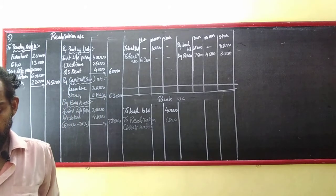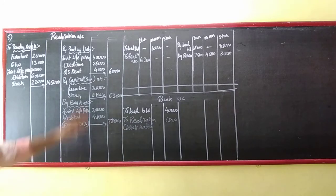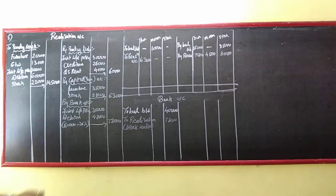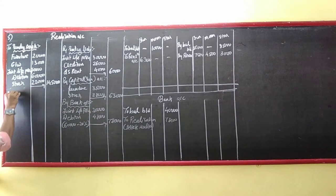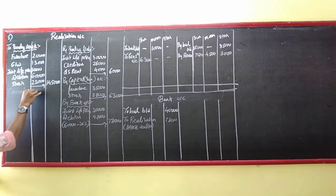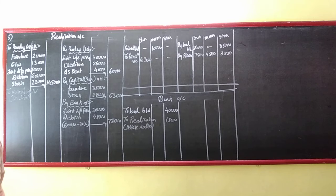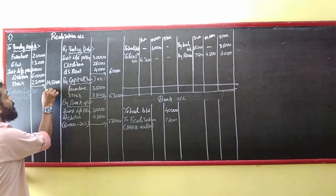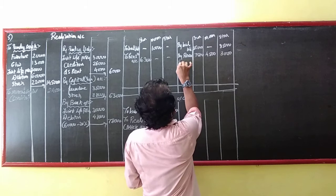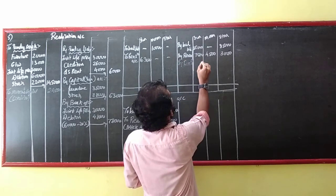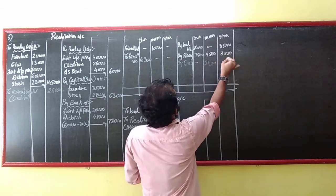Adjustment number 3: Sundry creditors were taken over by Moon at agreed value. Moon is going to pay the creditors, so Moon's capital account will be debited. Realization account to Moon's capital for creditors. Is he paying a discount? They have given the amount: 24,000. So we will have the same amount of 24,000.